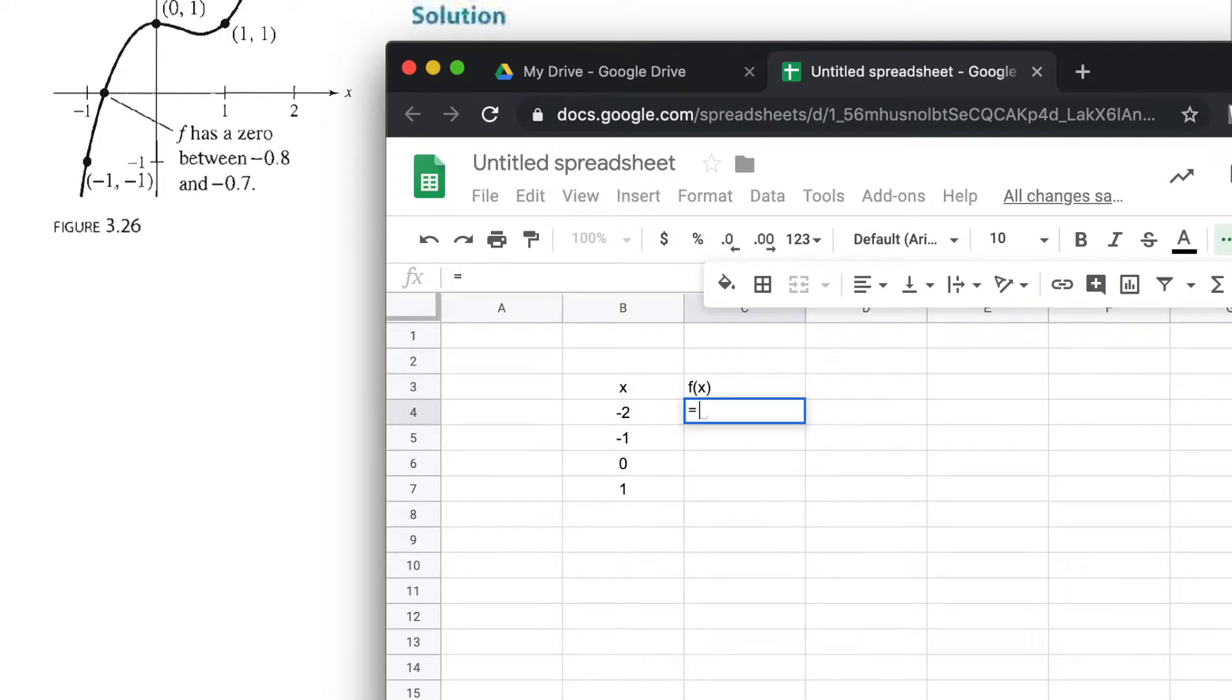I'm going to say equals, then put parentheses, click on the cell that contains -2, close the parentheses, and use shift-6 which is an up arrow caret and say to the third power, because f(x) = x³ - x² + 1.